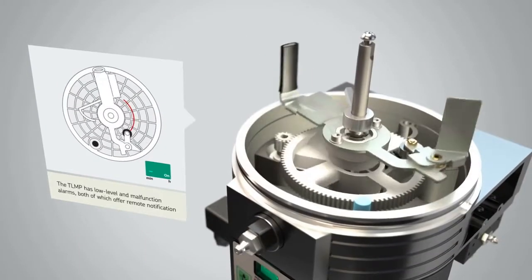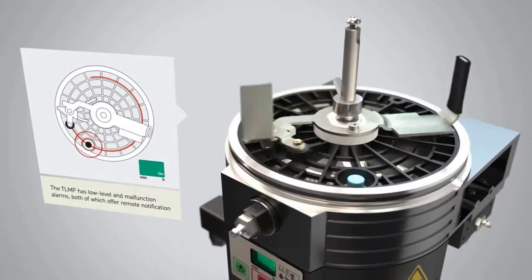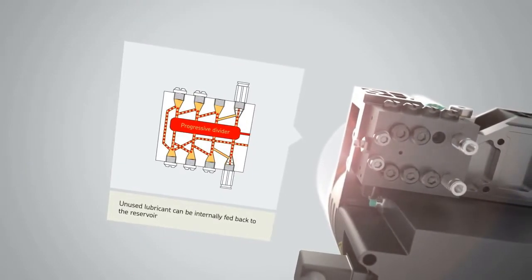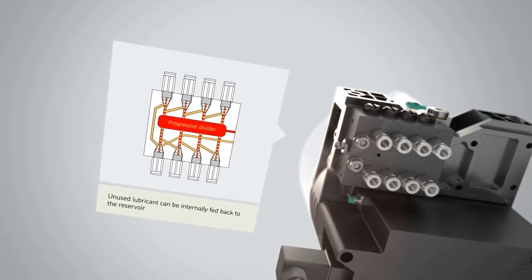Its reservoir features a capacity of nearly one litre and a stirring paddle to prevent grease separation. Its integrated divider block has eight outputs which can be plugged if not needed or used to adjust lubricant flow.